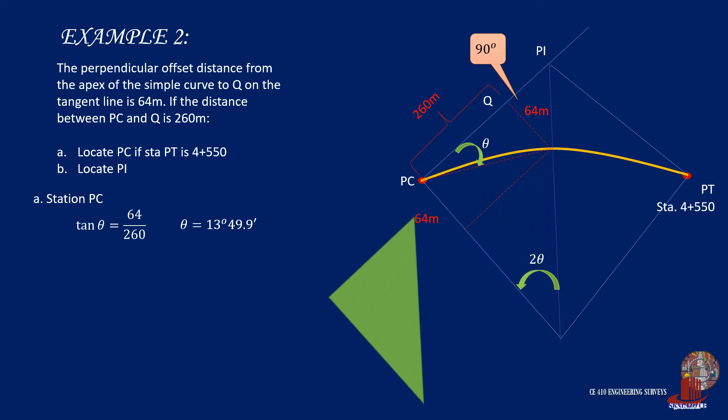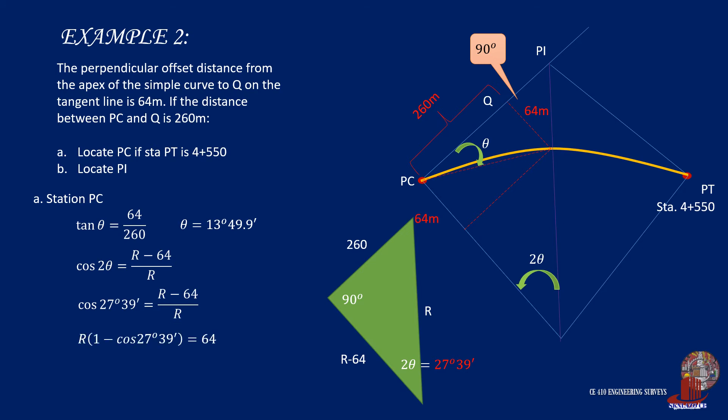Now take the bigger triangle produced when the 64-meter offset is projected on the radius near PC. The sides are 260, R, and R less 64, with angles of 90 degrees and 2 theta, which is 27 degrees and 40 minutes. By taking the cosine of 2 theta equal to (R less 64) over R, R is solved as 560.13 meters.